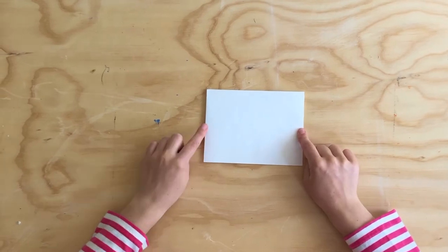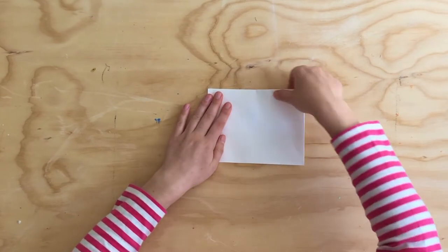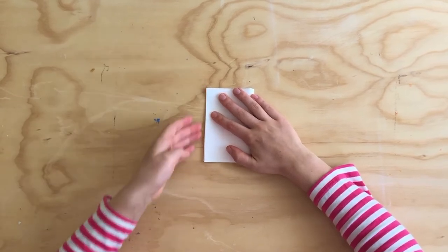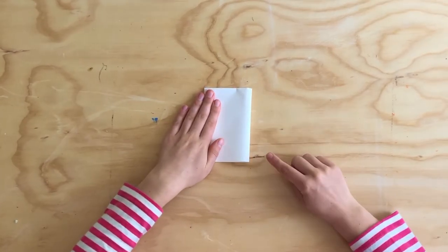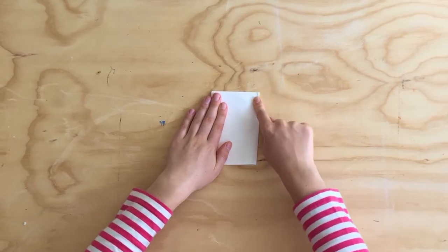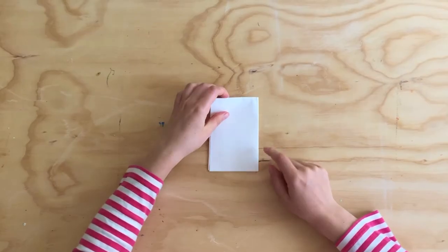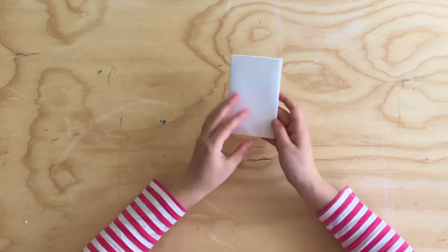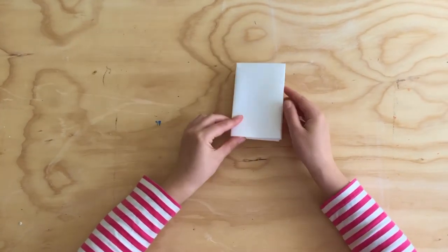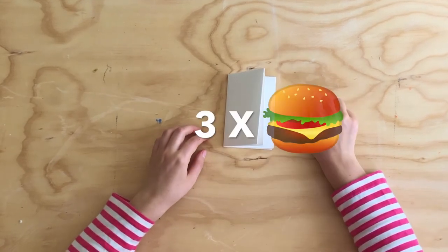The short edge is gonna meet the other short edge. Let's fold, meet our corners, hold it down, push the center, and then go up and pull down. Okay, so this is where we're going to be so far, and this is how our paper looks after doing three hamburger folds.